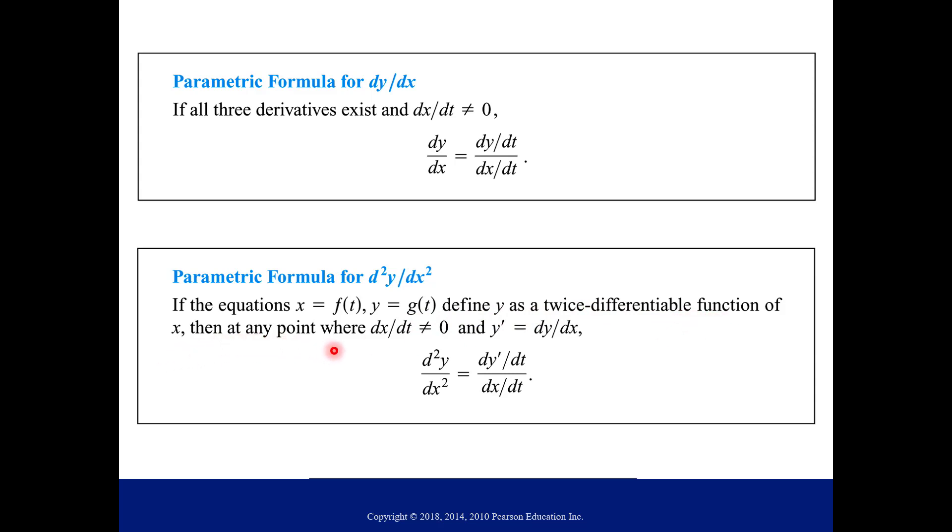So then as long as the derivative of x with respect to t is not zero, and the first derivative is just denoted as y prime, then the following is true. So this is just our background. You want to focus on the equation here. This says the second derivative of y with respect to x is just the first derivative of y with respect to t divided by the derivative of x with respect to t.